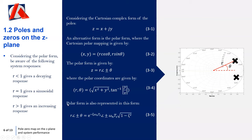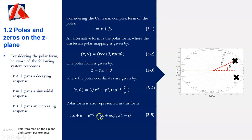The polar form is written as z = r∠±θ. Sometimes it's useful to work out the polar form directly from the natural frequency and damping ratio shown at the beginning of the lecture, using the exponential z = e^(sTs). If you have the natural frequency, damping ratio, and sampling interval, you can work out the radius r and the angle θ from those three properties.